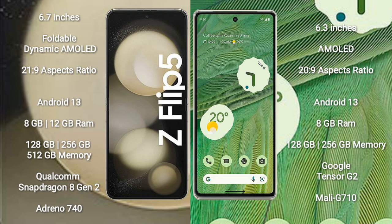Samsung Galaxy Z Flip 5 comes with 8GB or 12GB RAM and 128GB to 256GB internal storage, powered by a Qualcomm Snapdragon 8 Gen 2 processor with an Adreno 740 GPU. Google Pixel 7 comes with 8GB RAM and 128GB to 256GB internal storage, powered by a Google Tensor G2 processor with a Mali-G710 GPU.